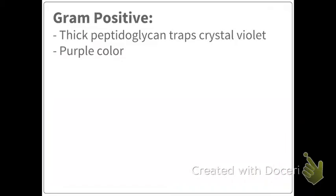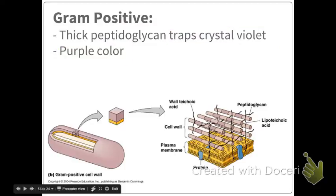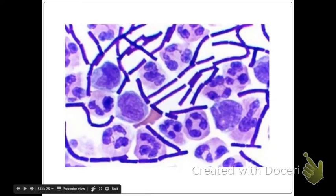Gram positive means the bacteria has a thick peptidoglycan layer, and that thick layer traps crystal violet, making the bacteria appear purple in color. Gram positive bacteria are not antibiotic resistant. Here's an example of the gram positive peptidoglycan layer cell membrane — a much larger peptidoglycan layer that traps the purple color.